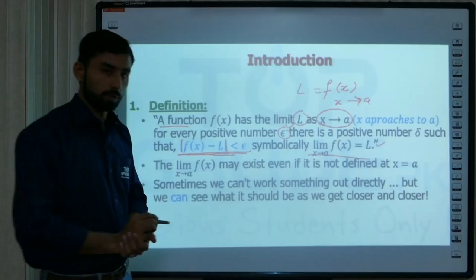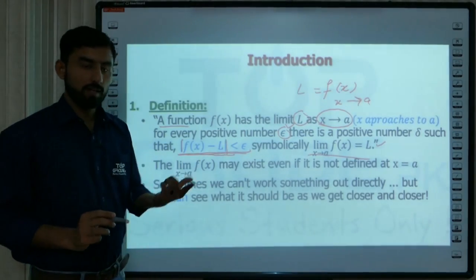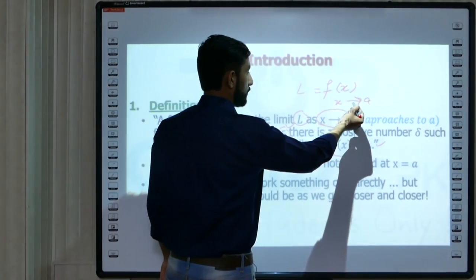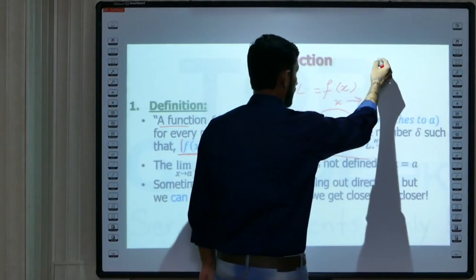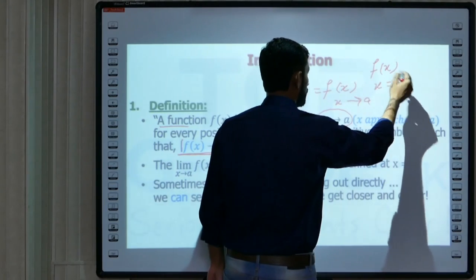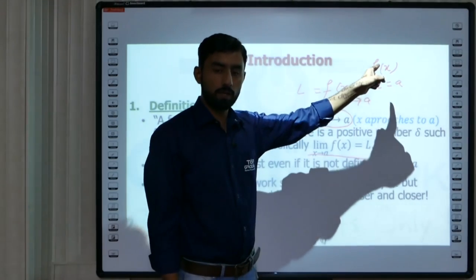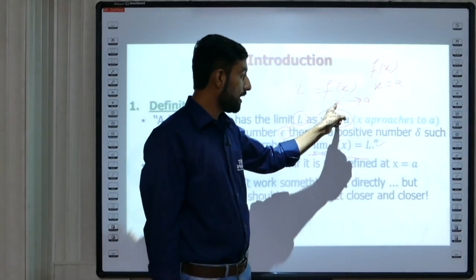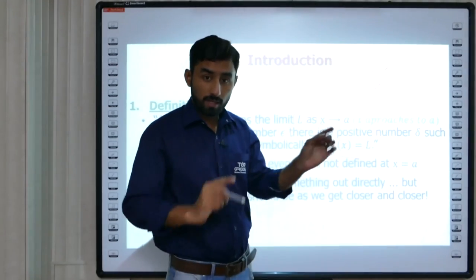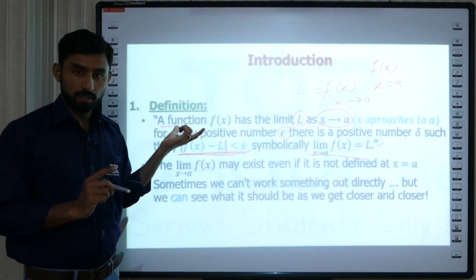Limit mein aur function ki asal value mein difference kya hai? Jaise hum ne likha f(x) aur x approaches to a, aur doosri cheez yeh ke f(x) jab x is equal to a. In dono mein difference yeh hai ke yahan pe hum x mein a ki value put kar rahe hain — exact a pe hum iski value dekh rahe hain. Aur yahan pe hum exact a pe value nahi dekh rahe, balke hum approaches to a — us ke qareeb tareen dekh rahe hain.